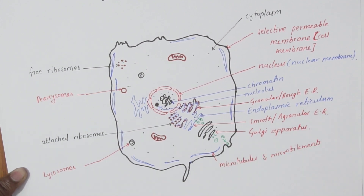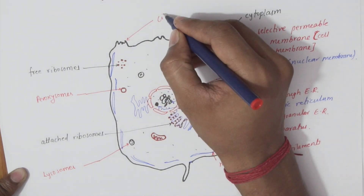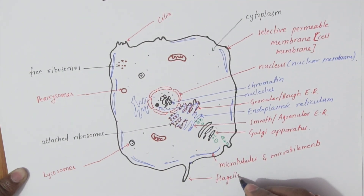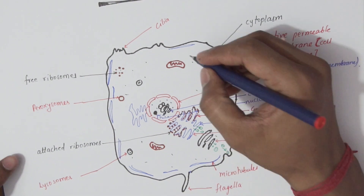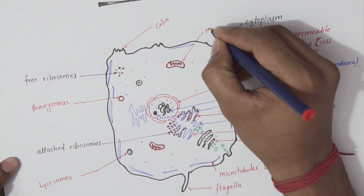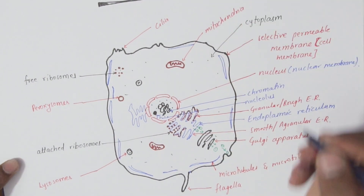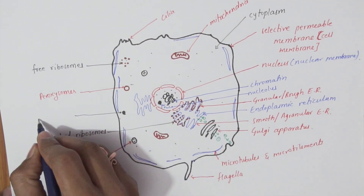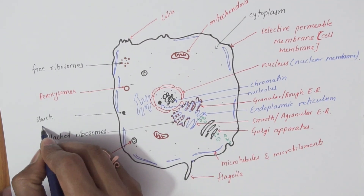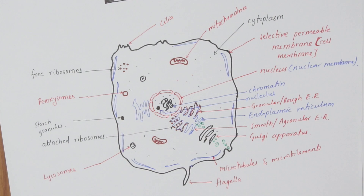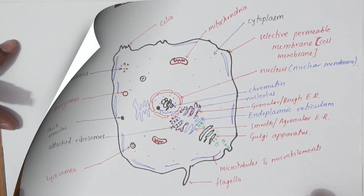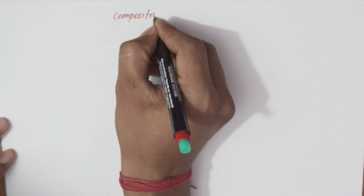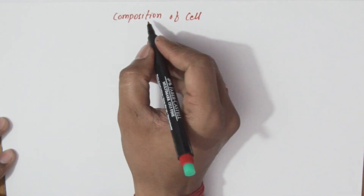You can also see thread-like structures called cilia and flagella, which are not seen in all cells. We also missed labeling mitochondria, and there will be some starch granules in the cell as well. Now we will discuss the composition of the cell.